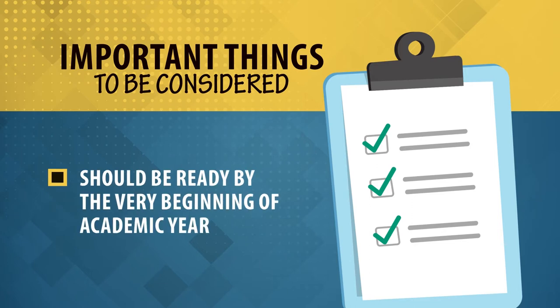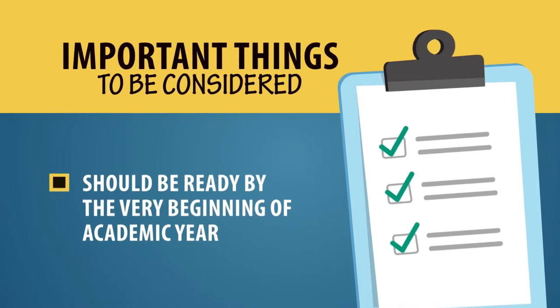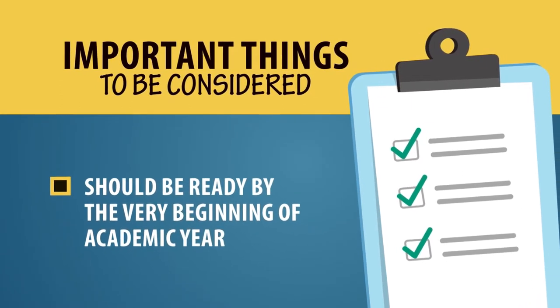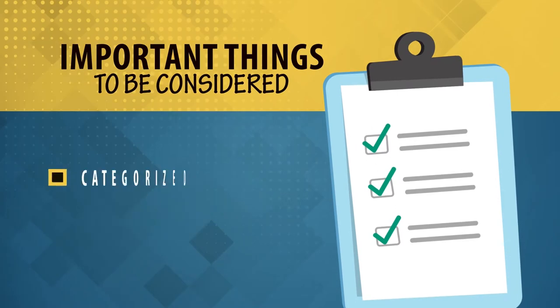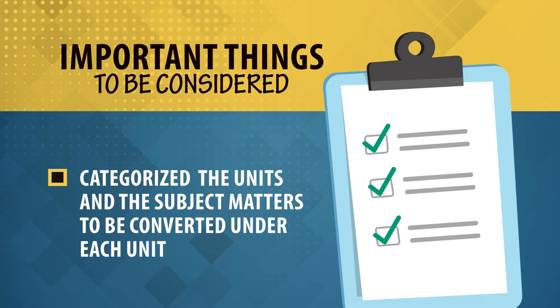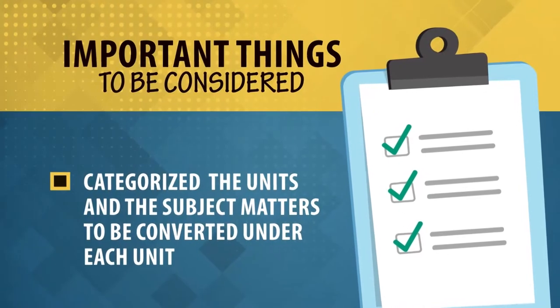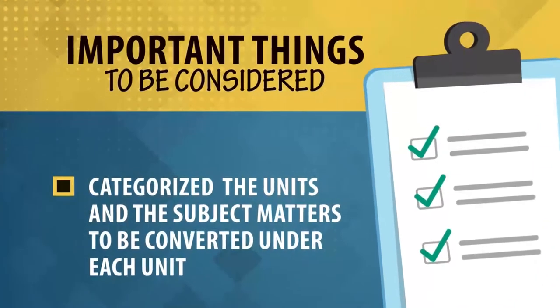It is suggested that your annual plan should be ready by the very beginning of the academic year, since the syllabus is given at the start of the session. When you plan your annual plan, you also categorize the units and specific subject matter to be covered in each unit. Every unit will not take equal time — for some units you may require 10 sessions, for others 5 or 7 sessions.